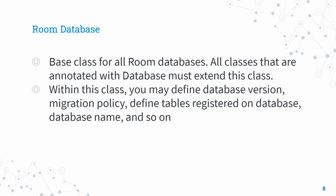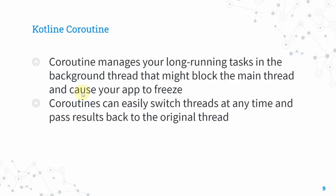The database class uses the singleton concept. A good practice is that if more than one thing accesses the same database, there should only be one instance of the database object at a time — that's the definition of a singleton. The Room database class provides configuration including database version, migration policy, registered tables, and database name.